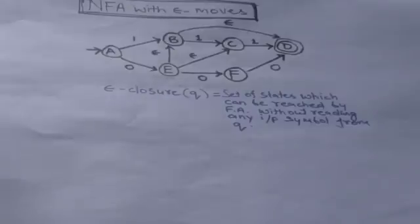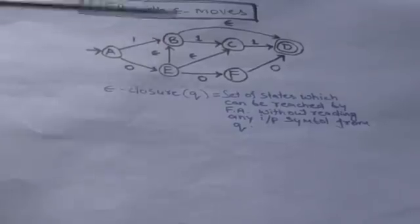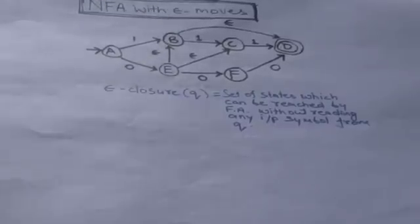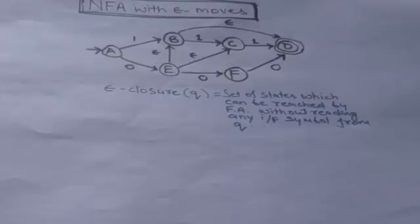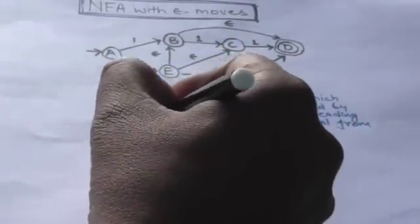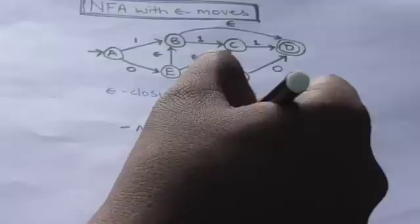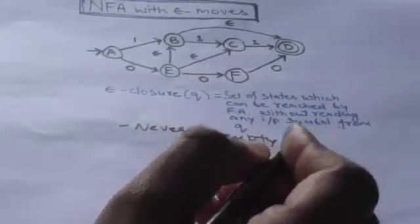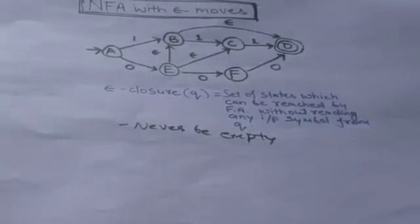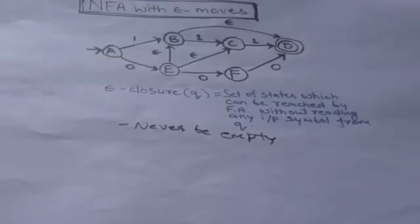Look at this empty transition — there is an empty transition from state B to state D. It shows that when the machine is in state B, without consuming any input symbol, it can jump from state B to state D. One important thing is that the empty closure of any state can never be empty. Even if the state doesn't have any empty transition, the empty closure of that state will never be empty.